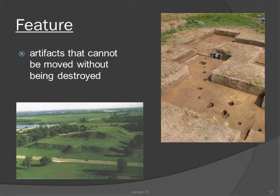The second kind of archaeological data is actually a kind of artifact, but it's special enough that we usually think of it as distinct — that's a feature. Artifacts are anything made or used by humans; features are artifacts that cannot be moved without being destroyed, such as a hearth, a storage pit, or a house.